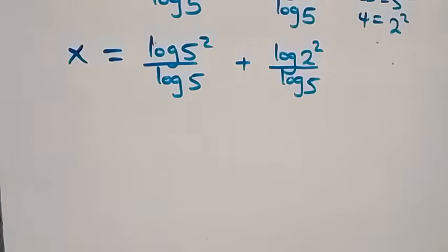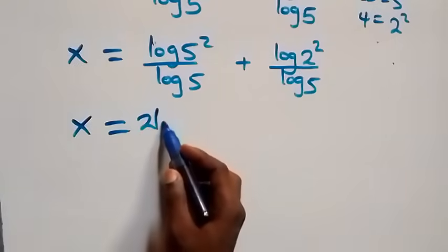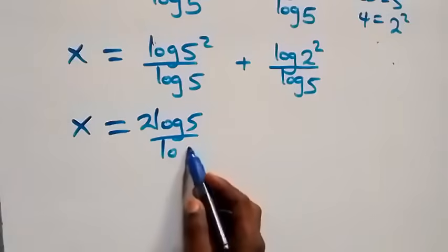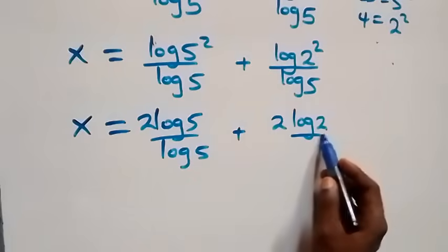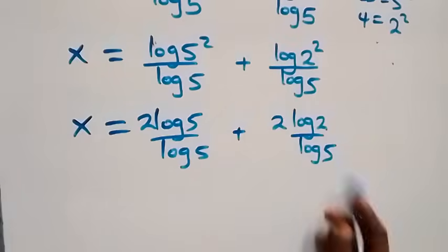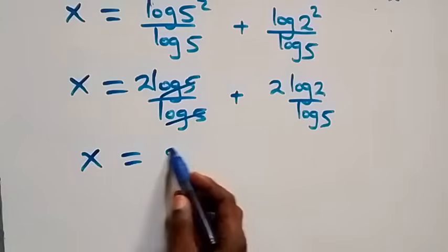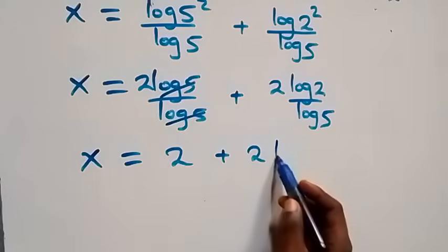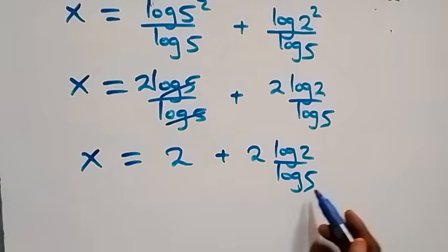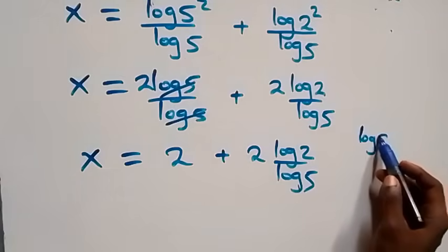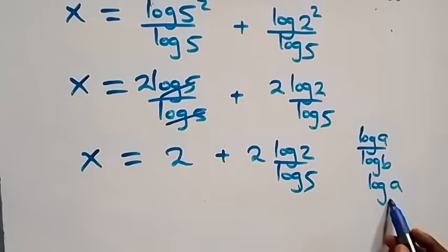Here we apply the power law of logarithms again — the exponent comes down — and we have x equals to 2·log5 over log5, plus 2·log2 over log5. Then log5 cancels in the first fraction, leaving 2, so x equals to 2 plus 2·log2 over log5. Applying the change of base rule, log a over log b can be rewritten as log a to base b.